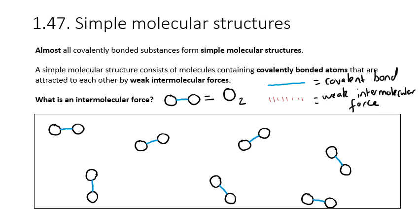For point 1.47, we want to know why simple molecular structures are solids, liquids and gases with low melting and boiling temperatures. All covalent substances, barring a few exceptions, form simple molecular structures. A simple molecular structure consists of molecules that contain covalently bonded atoms, but those molecules are attracted to each other by what we call a weak intermolecular force.